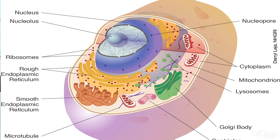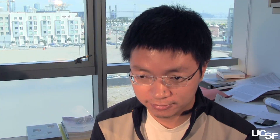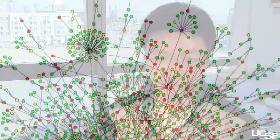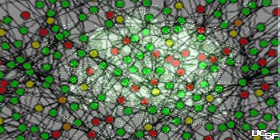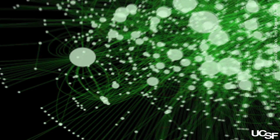After knowing the genome and proteome, the next key step to understand biology and disease is to identify the human interactome. The interactome is all of the interactions among proteins.